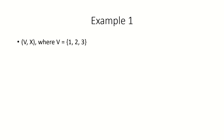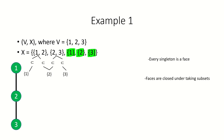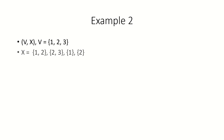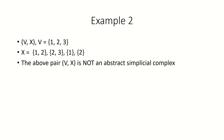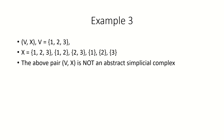Let's look at an example of a complex. If our set of vertices is {1, 2, 3} and our set of faces is this, we have an abstract simplicial complex, as every singleton is a face and every non-empty subset of any face is also a face. If our faces were this instead, we would not have an abstract simplicial complex because we'd be missing one of the singletons. Also, if this was our set of faces, we still would not have an abstract simplicial complex, because we'd be violating the second property — closure under taking subsets — since a face has a subset which is not a face.